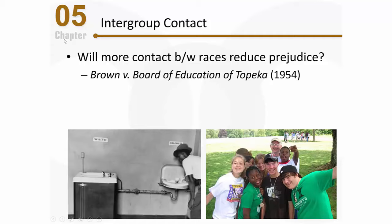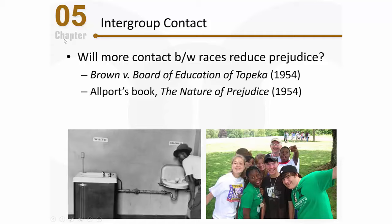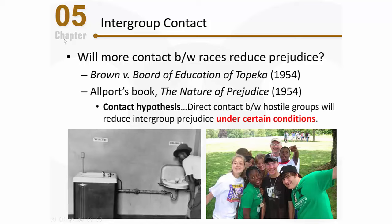As a result of that Supreme Court decision, there were now going to be examples of schools in which there was going to be much more interaction between kids of different races. Right along at the same time, Gordon Allport published a very influential book in psychology called The Nature of Prejudice. He talked about many important things in that book, but one thing related to this situation was the contact hypothesis. The contact hypothesis simply stated that direct contact between hostile groups will reduce intergroup prejudice, but only under certain conditions.